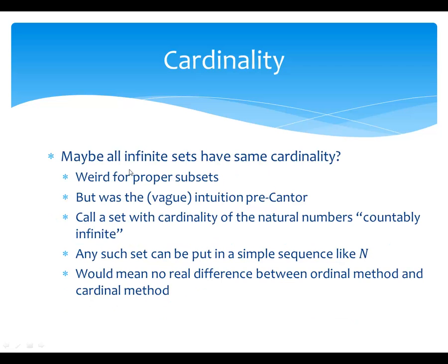What this suggests is that the one-to-one correspondence method of saying when two sets have the same size seems very, very loose and very generous — maybe it's just always going to say infinity is infinity. That would be the simplest thing, and nobody had ever really thought about different kinds of infinity before. We just saw how it's a little weird when a set is equivalent to a proper subset of itself, but it really does turn out to be the right notion most of the time.